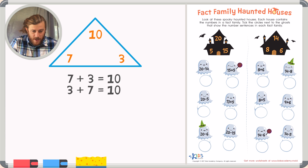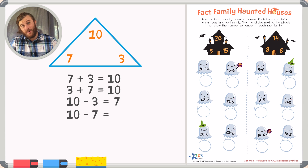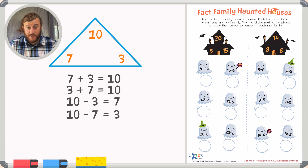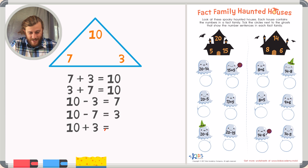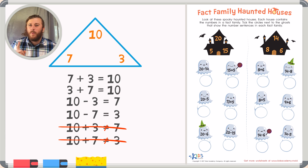We can also subtract. We can subtract 10 minus 3 and we'll get 7. And if we took 10 and took away 7, can you guess what the answer is? That's right — it's 3. There are some equations that don't belong in the fact family. For example, if you added 10 plus 3, you're not going to get 7. So 10 plus 3 does not belong in the fact family. The same goes for 10 plus 7 — that does not equal 3, so it also does not belong. Remember to check your work when making sure an equation belongs inside the fact family.